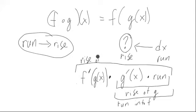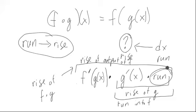Well, the rise of f of g even, but the rise of the output of f. So ultimately, the rise of f of g given a run. This right here is a nice description of the derivative of a composition.